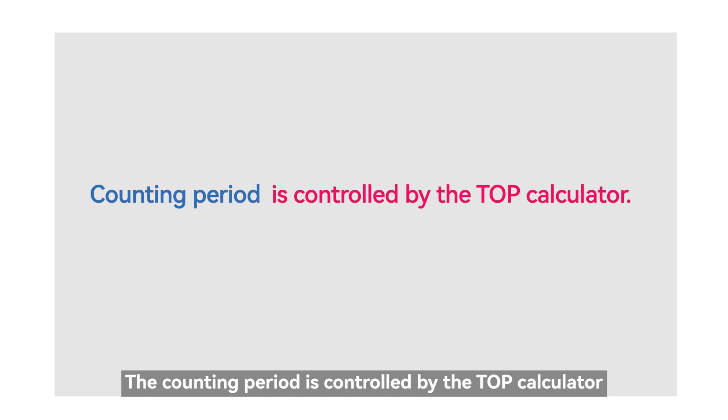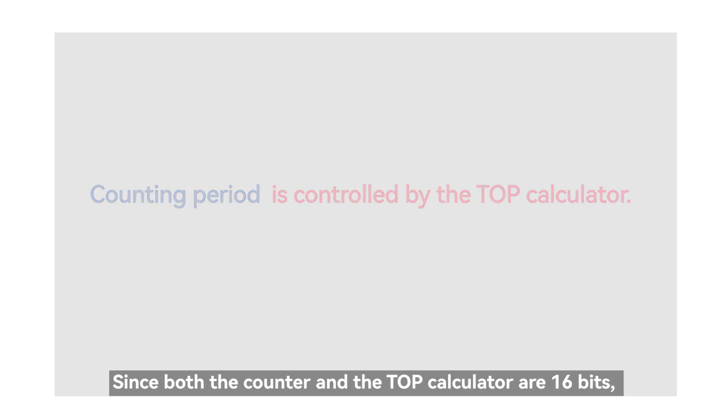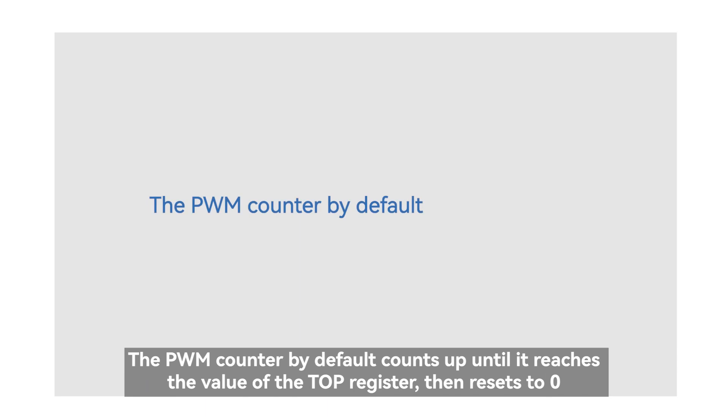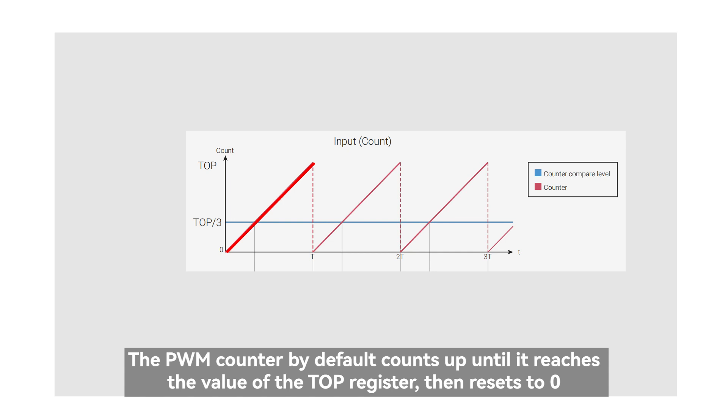The counting period is controlled by the top register. Since both the counter and the top register are 16 bits, the maximum cycle is 65,536 cycles. The PWM counter by default counts up until it reaches the value of the top register, then resets to zero.